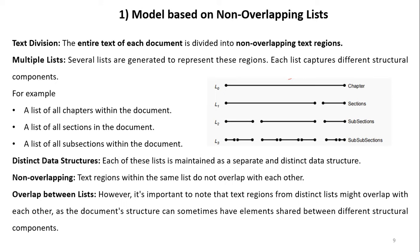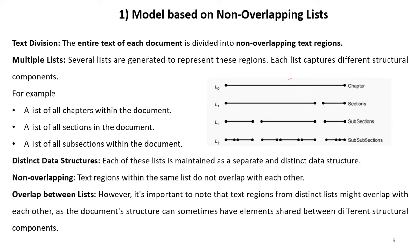The lists are represented as L0, L1, L2, L3 — for chapter, section, subsection, and sub-sub-subsection respectively. There is no overlapping within the chapter list, and no overlapping within the section list. However, two distinct lists can overlap with each other. Each list is maintained as a separate and distinct data structure. Text regions within the same list do not overlap with each other, but text regions from distinct lists might overlap.